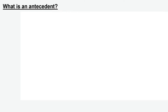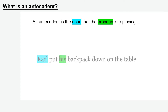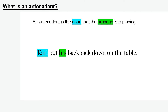We're going to be using the word antecedent a lot in this lesson, so it's important that you understand what an antecedent is. An antecedent is a fancy word for the noun that the pronoun is replacing. So for example, in this sentence, 'Carl put his backpack down on the table.' We could also write this as 'Carl put Carl's backpack down on the table,' but we want to replace that second Carl with the pronoun his. So the word Carl is the antecedent.